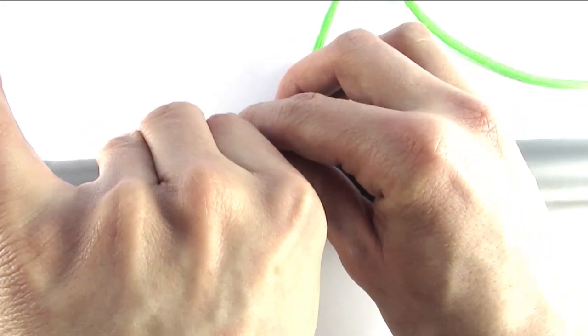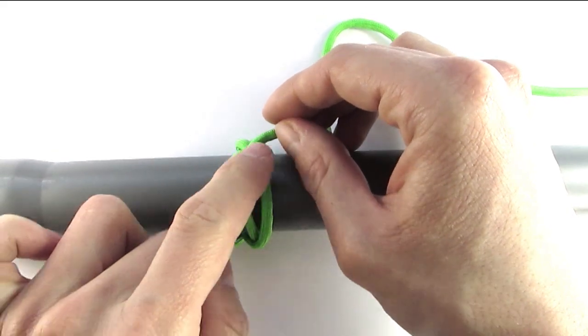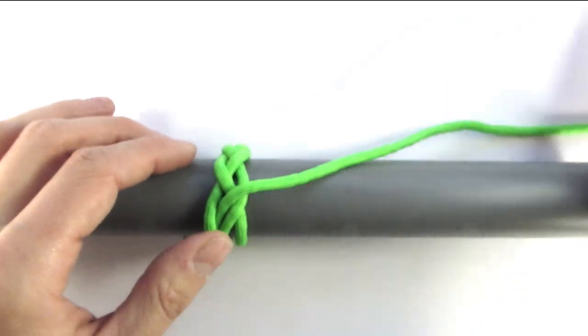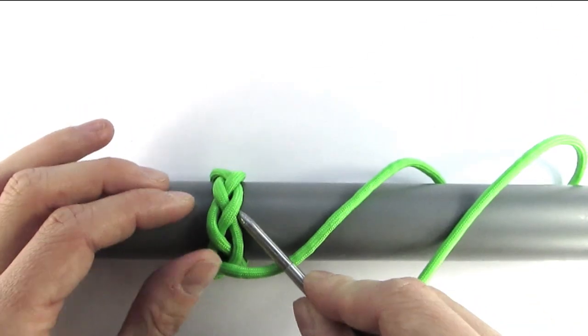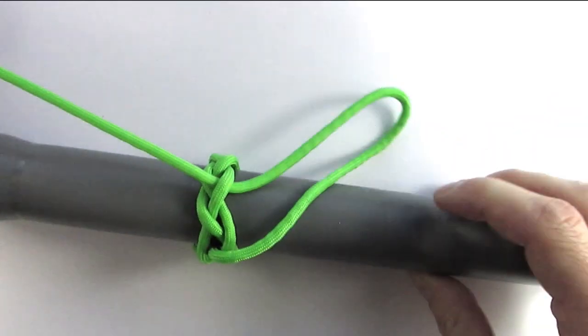We're now going to slide our working end over the standing end like this, then follow up our standing end going under one cord, then following it all the way to the left side and over it.